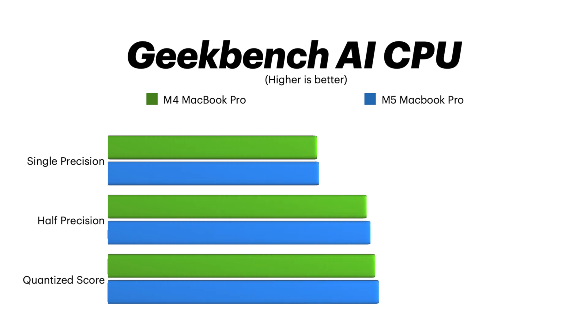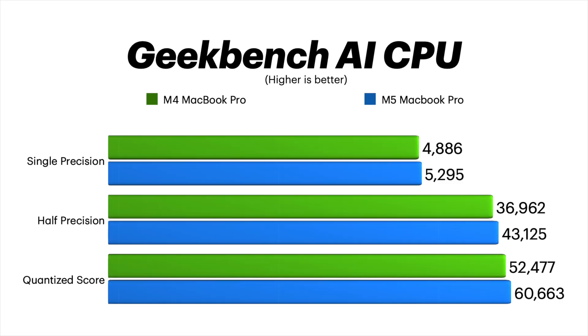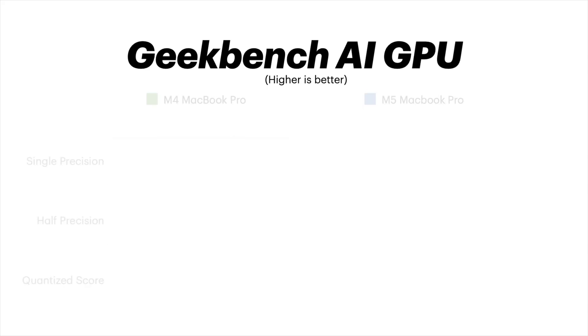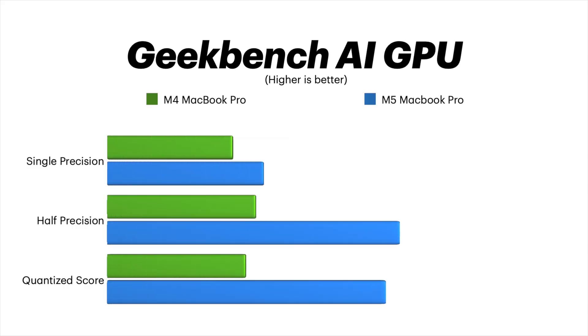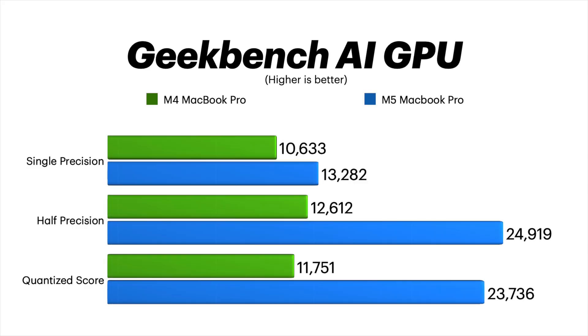I also ran some benchmarks using Geekbench AI. On the CPU side the scores were pretty close, but on the GPU side — especially the quantized score — it went through the roof, probably due to the neural accelerators. This means the M5 is going to handle those AI tasks faster than ever.